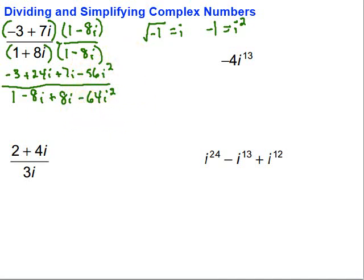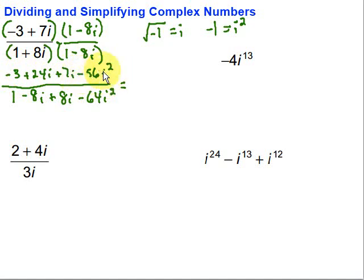Now we want to be on the lookout for those i squareds because we can simplify them. On the top, that i squared equals negative 1, so I can replace it. Combining like terms: negative 3, and negative 56i squared becomes negative 56 times negative 1, which is plus 56. So plus 56 minus 3 gives us 53. Then combining the i pieces: 24i plus 7i gives plus 31i. We can have i's on the top — that's okay.